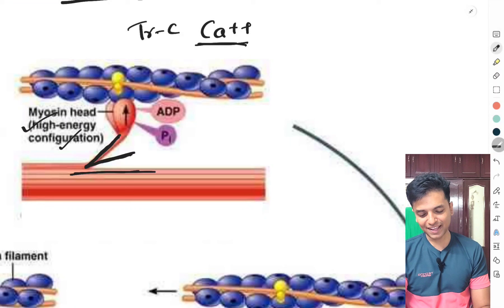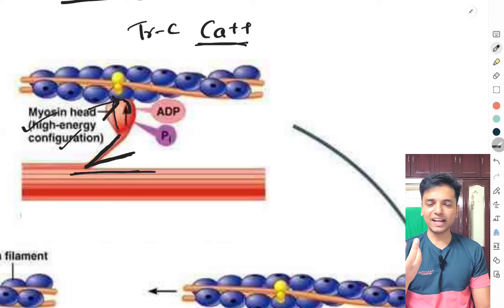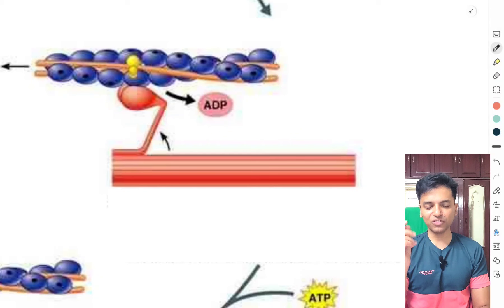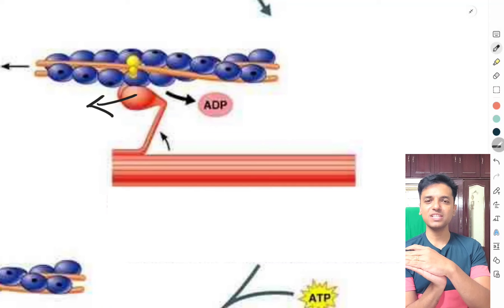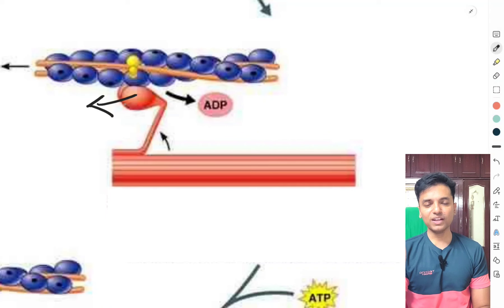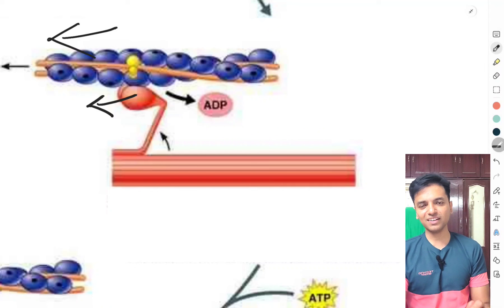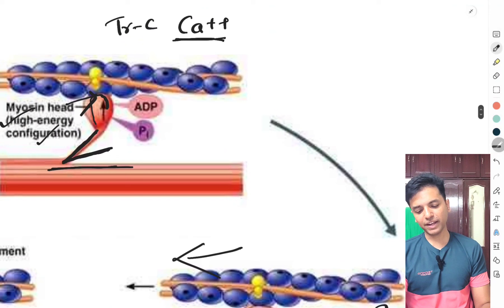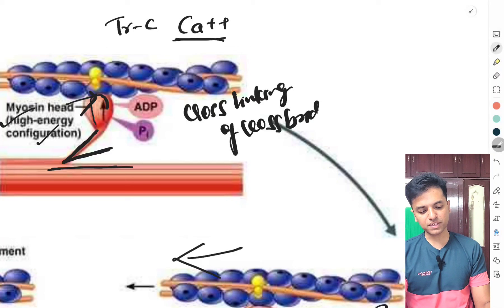Once the active binding sites on the actin molecule are uncovered, the high-energy configuration of the cross bridge head attaches to the actin molecule. When the head of the cross bridge attaches to actin, there is a conformational change in the myosin head, causing it to tilt towards the center of the sarcomere — that is, towards the arm. This is what is called the power stroke. The prior process where the energized head bound to actin is called cross-linking of cross bridges.